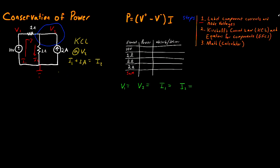Now we need to do our equations for components, starting with our resistors. The equation for a component is just the equation that governs how it behaves in the circuit. Starting with the 1 ohm resistor, the equation is Ohm's Law: I1 is equal to V1 minus V2 divided by the resistance value. It's very important that you subtract in the correct direction, based on the direction the current is flowing — we subtract V1 minus V2 because the arrow points from V1 to V2. The charges are moving to a lower energy state as they go from V1 to V2 because the resistor is consuming power.